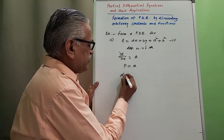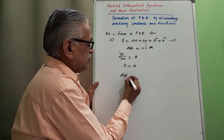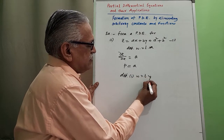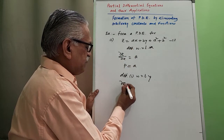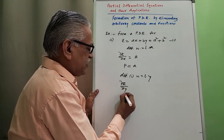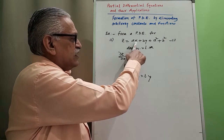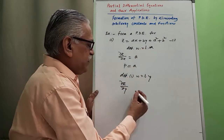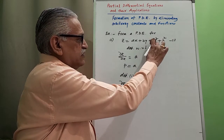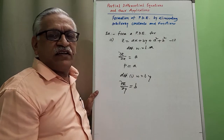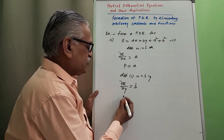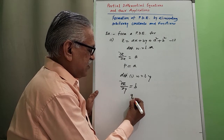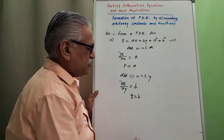Then differentiating equation 1 with respect to y, we get dou z by dou y: the ax term gives zero, the by term gives b, and a² and b² are constant so their derivatives are zero. Since dou z by dou y is q, we get q equals b.